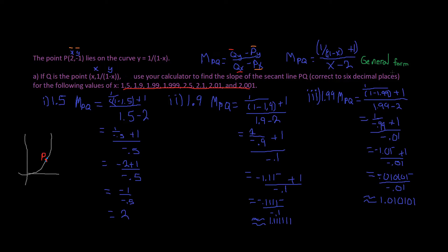Here's our general form of the equation after plugging everything in. From point P, x = 2 becomes minus 2 and y = -1 becomes positive 1 on the right side. The x values are given to us from the question.